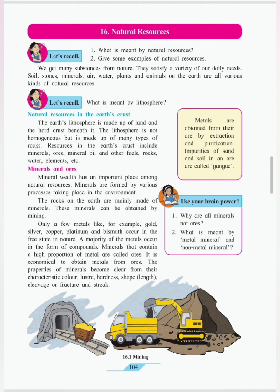Metals are obtained from their ore by extracting and purification. Impurities of sand and soil in an ore are called as gangue.